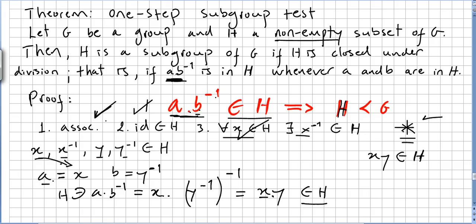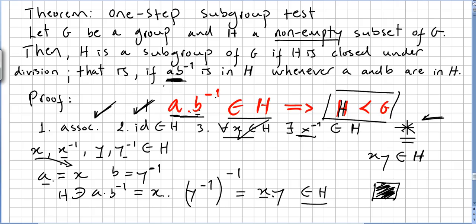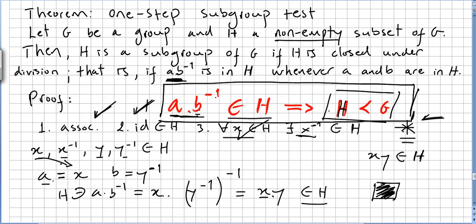We have proved: the operation is associative, there is an identity, there is an inverse for any element, and H is closed under the operation. That concludes the theorem. Because if A times B⁻¹ is in H whenever A and B are in H, then H will be a subgroup of G. If this condition holds, all the group axioms are valid.